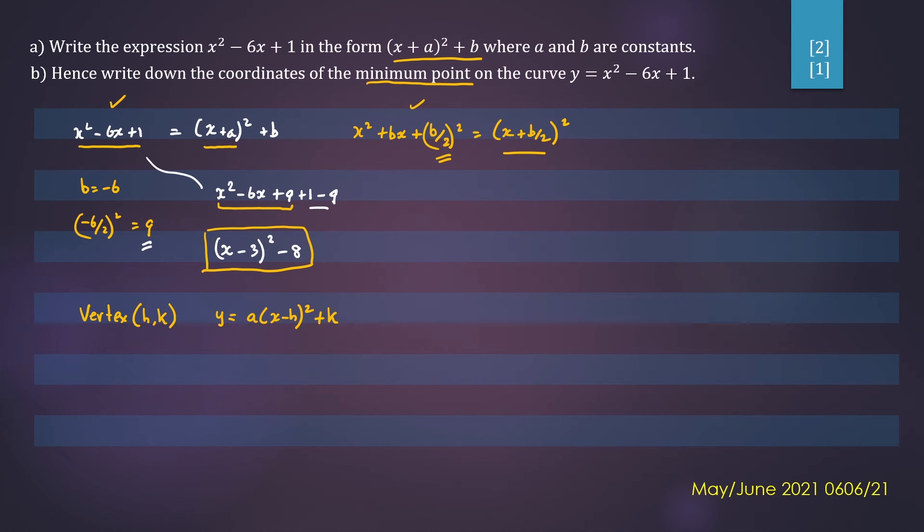So when we compare our standard form to the question, we can see that h equals 3. And k will equal this value here. So k will equal negative 8.